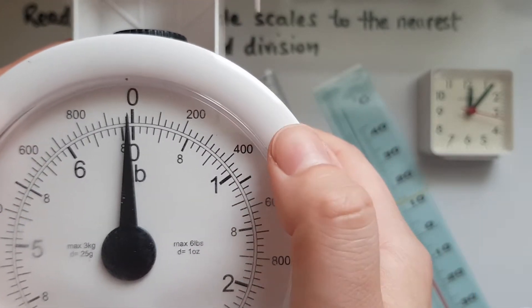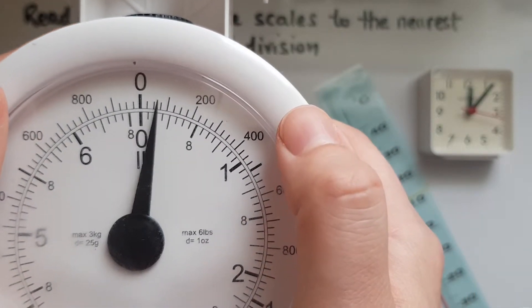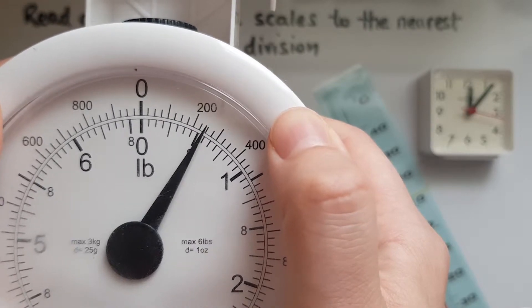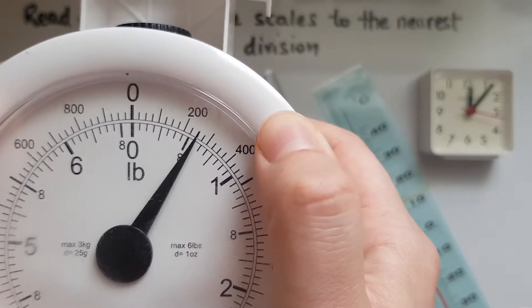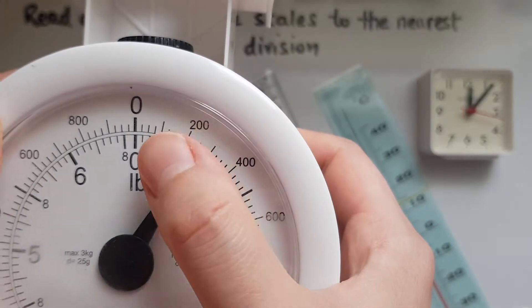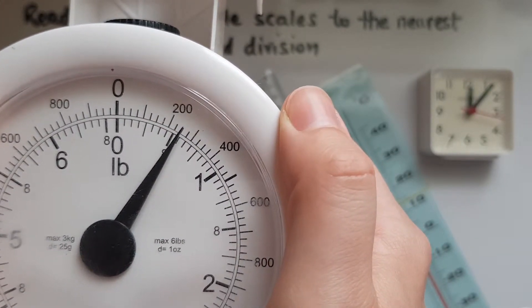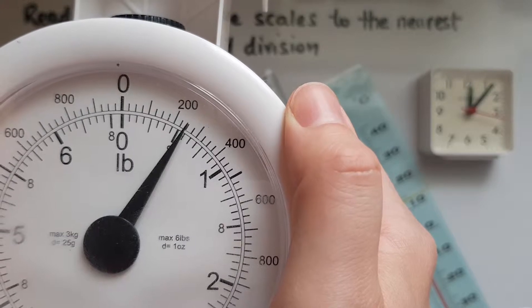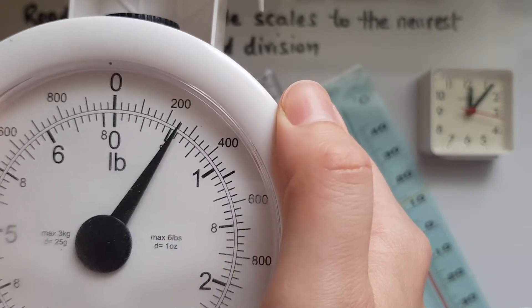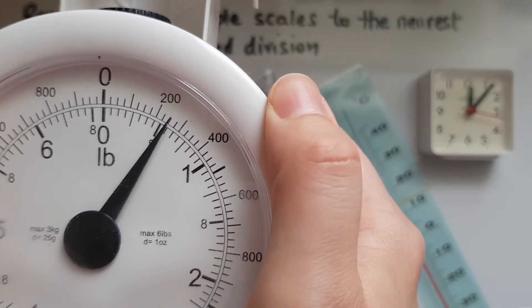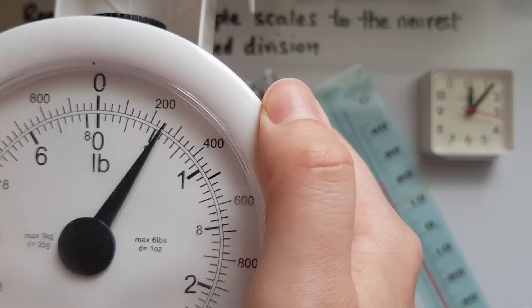So if I asked what does this measure, then we learned there are 25 in each division. There are two divisions after 200, so that makes 50. 250. That is how we read this. 250 grams.